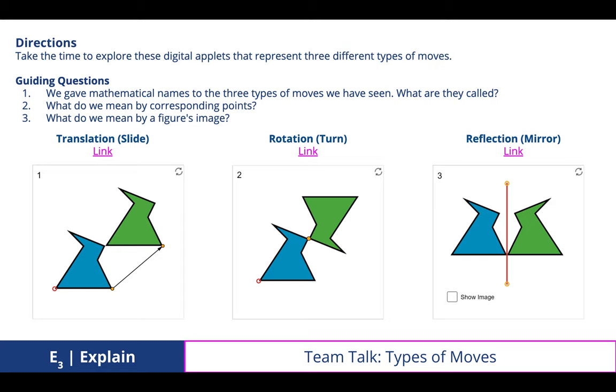What do we mean by corresponding points and what do we mean by a figure's image? We said that corresponding points are the matching vertices from the pre-image to the image.